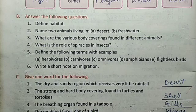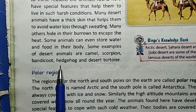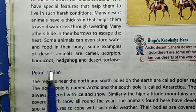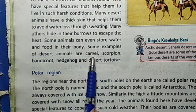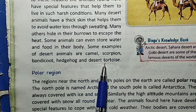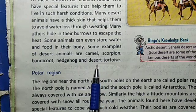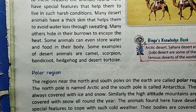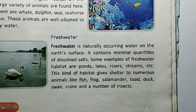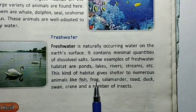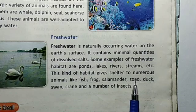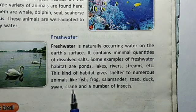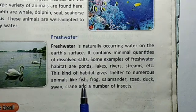Desert habitat animals include camel, scorpion, and bandicoot. Fresh water habitat animals include fish, frog, salamander, duck, swan, and crane.